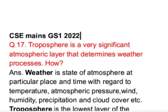This is a simple and direct question from physical geography. The question is: troposphere is a very significant atmospheric layer that determines weather processes — how? In this question there are two keywords: troposphere and weather. We will start the answer by defining weather and giving a brief introduction of troposphere.